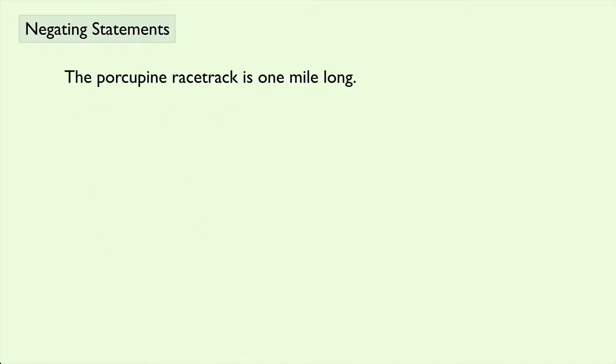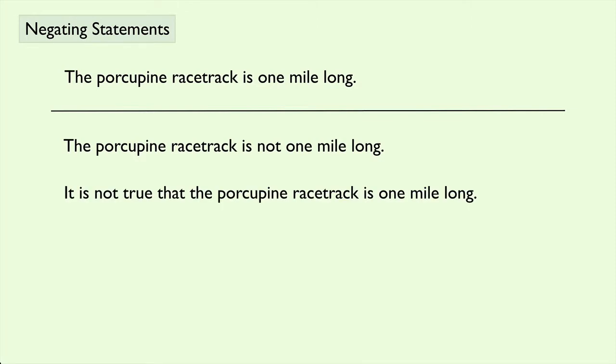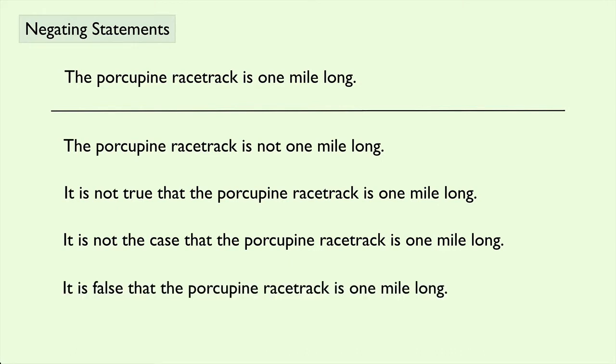There are many ways to negate a statement. Consider the statement: the porcupine racetrack is one mile long. We could say the porcupine racetrack is not one mile long. We could say it is not true that the porcupine racetrack is one mile long. We could say it is not the case that the porcupine racetrack is one mile long. Or we could say it is false that the porcupine racetrack is one mile long. Any of these would lead to a negation — choose your favorite.